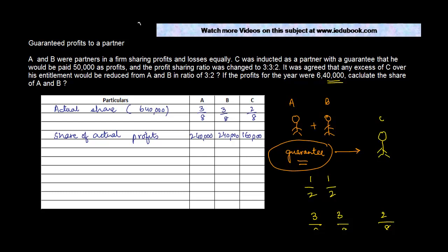So what is the share which C has got? C has basically received 160,000 and his minimum guarantee was 50,000. So there is no problem. A and B does not need to give anything.